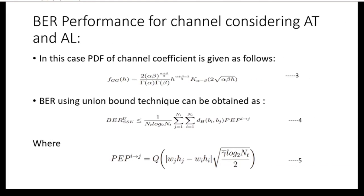Now we will calculate the bit error rate for the considered general model considering different parameters. First, we consider atmospheric turbulence and attenuation loss. For this case, the PDF of the general model is given by equation 3, and we calculate bit error rate using the union bound. In equation 4, the union bound is shown, where PEP is the pairwise error probability between symbols Bi and Bj. D(Bi, Bj) is the number of bits in error when Bi is decoded as Bj or Bj is decoded as Bi.